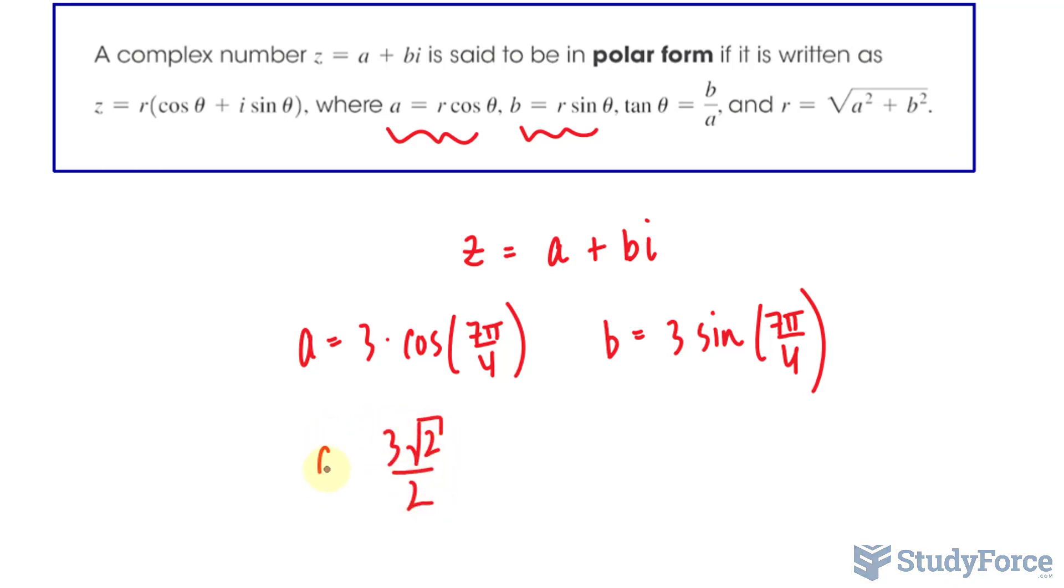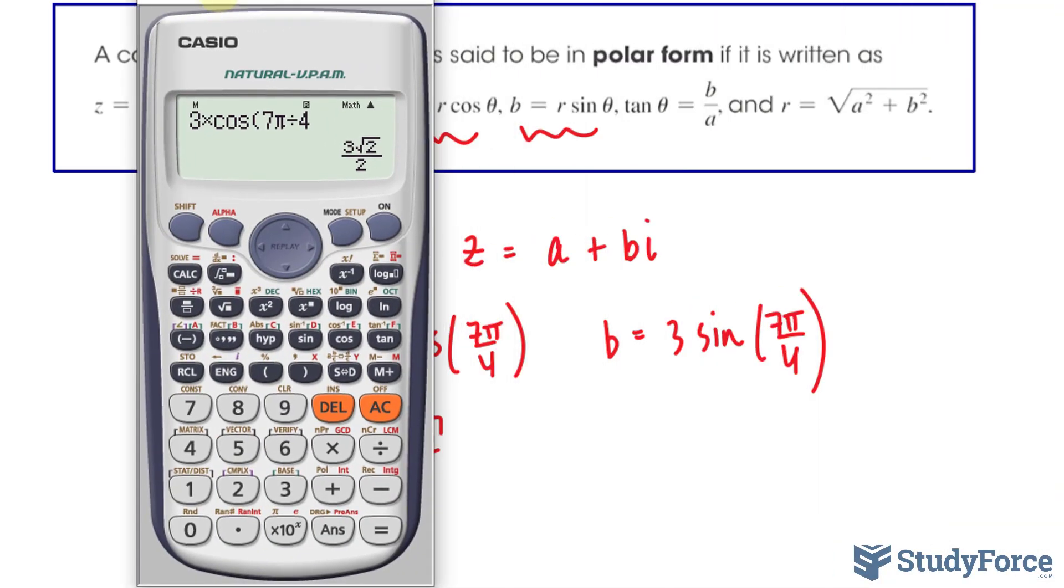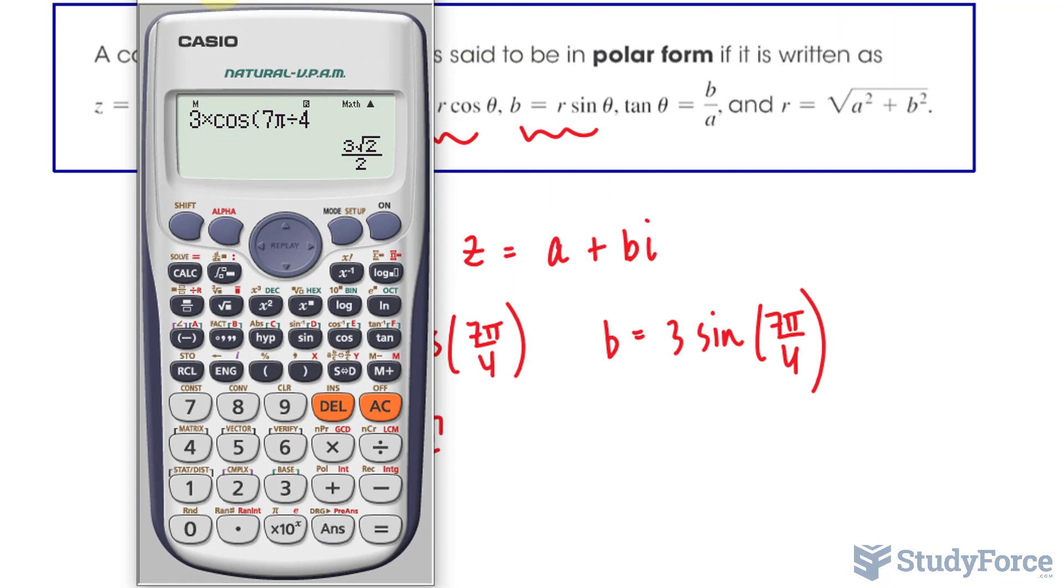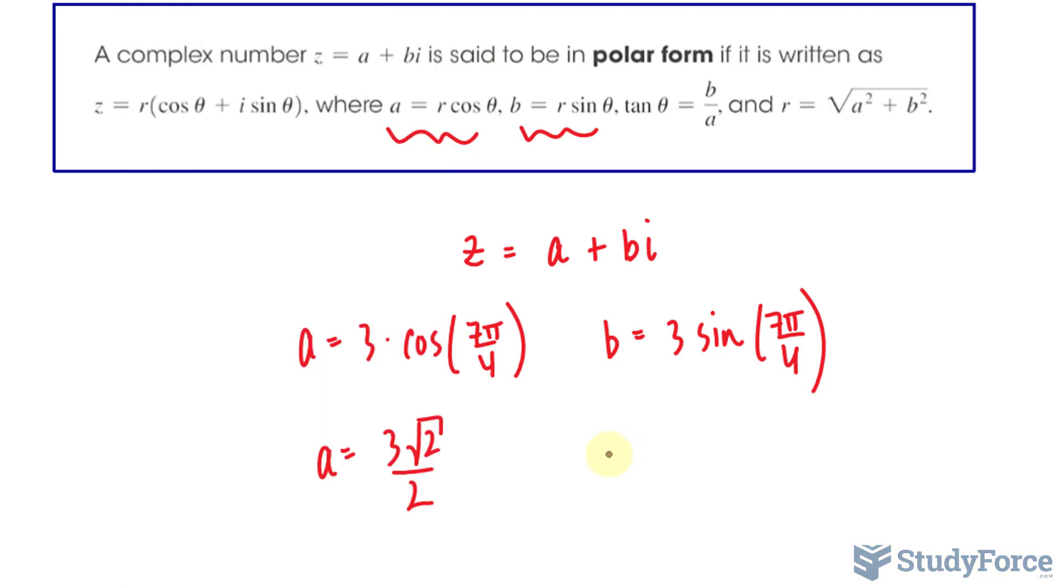We just found our A value, and to find our B value, we'll do the same thing. Now, make sure that your calculator is in radians because that angle is in radians. Otherwise, if you see a degree unit, make sure your calculator is in degrees. Again, 3 times sine 7π over 4, and we get negative of the expression we wrote earlier. So, negative 3 times the square root of 2 over 2.